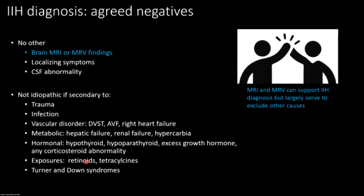One thing we all agree on is some of the negative stuff. All the criteria say that your brain MRIs and MRVs can't have other causes of elevated intracranial pressure on them. In many ways, imaging is there to exclude other causes — making sure it's not pseudotumor, but that you actually had a brain tumor, or that you have a thrombosed vein.